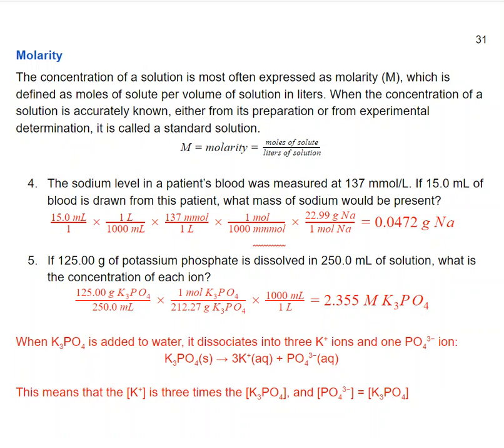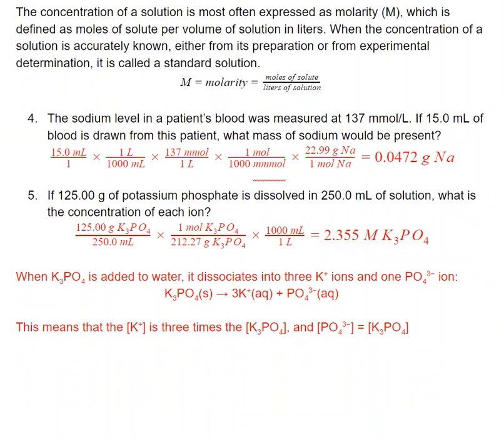Here's a couple of molarity problems. The sodium level in a patient's blood is measured at 137 millimoles per liter. If we have 15 milliliters of blood drawn from the patient, what mass of sodium would be present? This is a very common type of calculation that someone in the medical field or a nurse might have to make, where we might need to know a particular mass of a medication or something like that to give to a patient based on a concentration in their blood.